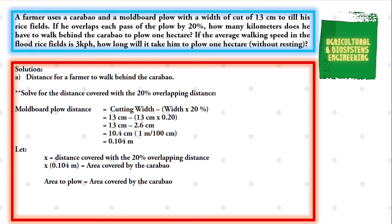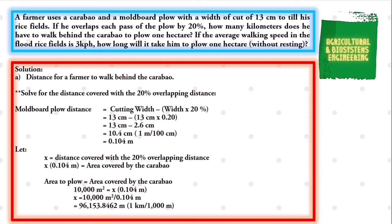We can now solve for the distance for a farmer to walk behind the carabao by equating the area to plow equal to area covered by the carabao. We know that the area to plow is 1 hectare, which is equal to 10,000 square meters. We substitute and we have: 10,000 square meters is equal to x multiplied by 0.104 meter. We divide both sides by 0.104 meter and we obtain x is equal to 10,000 square meters over 0.104 meters. We get the quotient and we have 96,153.8642 meters, which converts to 96.1538 kilometers.